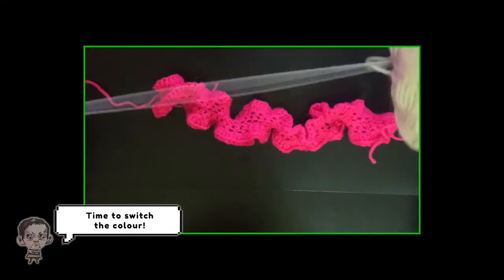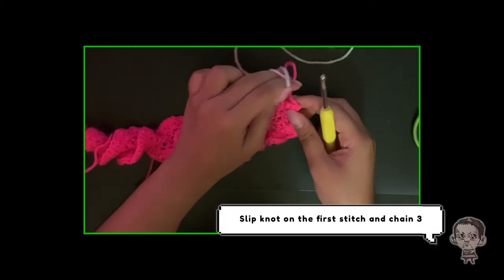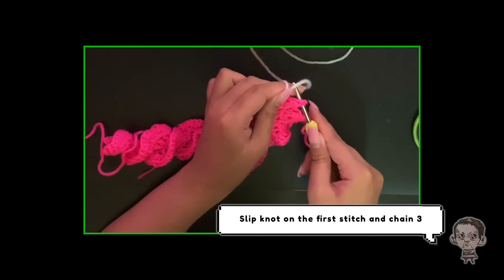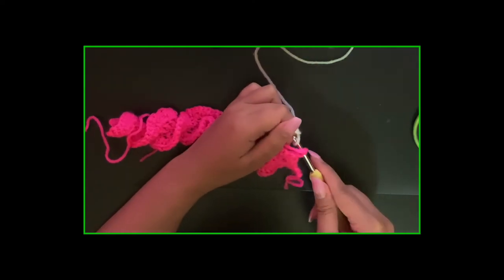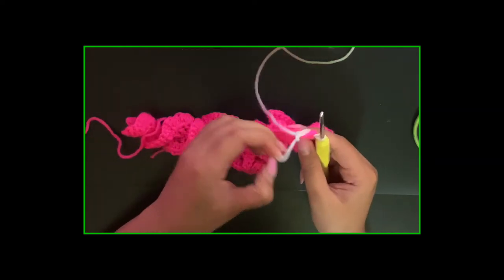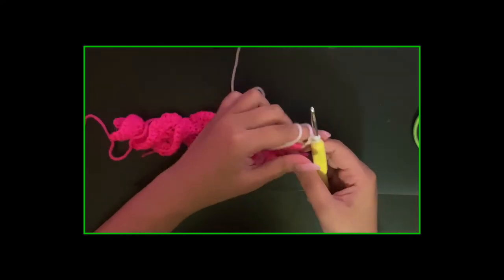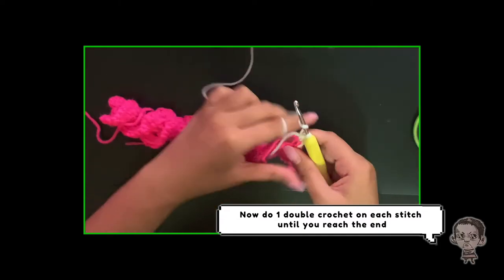Time to switch the color. Slip knot on the first stitch and chain 3. Now do one double crochet on each stitch until you reach the end.